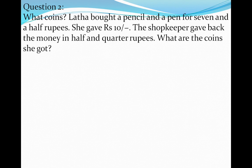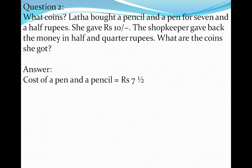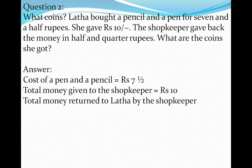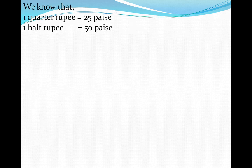Now the next question is related to coins. Latha bought a pencil and a pen for 7 and a half rupees. She gave Rs. 10. The shopkeeper gave back the money in half and quarter rupees. What are the coins she got? Cost of pen and pencil is Rs. 7 and a half. Total money given to the shopkeeper is Rs. 10. So the money returned to Latha: we have to do subtraction — Rs. 10 minus Rs. 7 and a half. So 10 minus 7 minus half becomes 3 minus half, which gives the answer 2 and a half. We know that one quarter rupee is equal to 25 paise and one half rupee is equal to 50 paise.